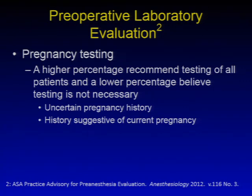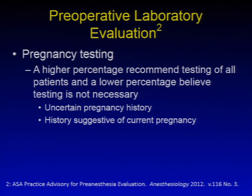Regarding pregnancy testing, a higher percentage of ASA members and consultants recommend testing all patients of childbearing age. The indications are uncertain pregnancy history or a history suggestive of current pregnancy. For any female of childbearing age in an elective procedure, a positive test would change management — you might recommend postponing elective procedures until after the pregnancy has ended.